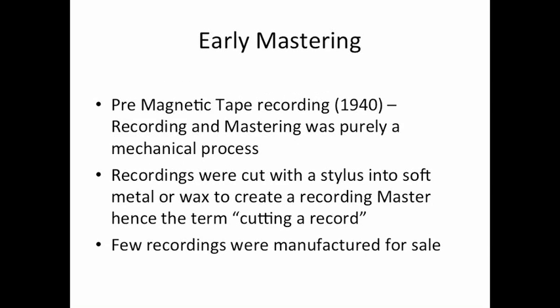Let me take you on a little journey, because it's actually really interesting how we got to this point. Early mastering, pre-magnetic tape, was purely a mechanical process — basically so they could record properly and capture the sound. Recordings were cut with a stylus into a soft metal or wax to create the recording master, hence the term 'cutting a record,' because they actually did take a stylus that cut into something as they recorded.